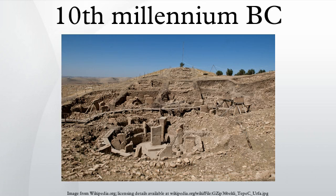The 10th millennium BC marks the beginning of the Mesolithic and Epipaleolithic periods, which is the first part of the Holocene Epoch. Agriculture based on the cultivation of primitive forms of millet and rice occurred in Southwest Asia. Although agriculture was being developed in the Fertile Crescent, it would not be widely practiced for another 2,000 years. The world population was between 1 and 10 million people, most of whom were hunter-gatherer communities scattered over all continents except Antarctica and Zealandia.